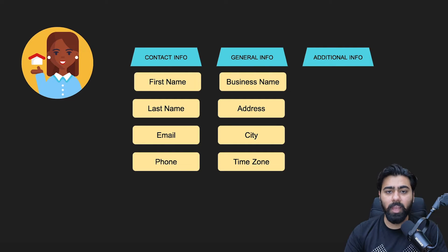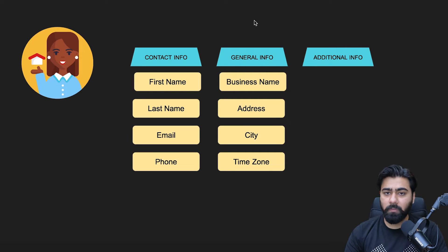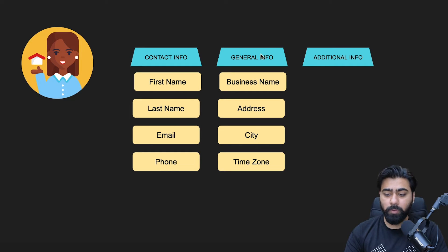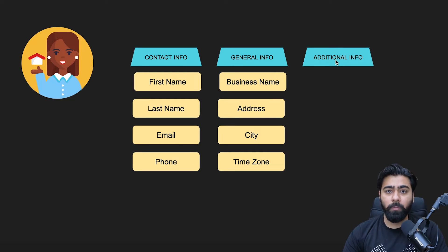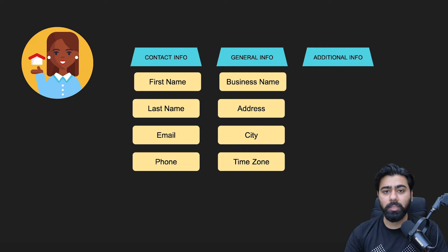Let's say you are a real estate agent with an account in Go High Level. These are the custom fields available to you by default. There are three categories or folders: one is Contact Information, which has custom fields like first name, last name, email, and phone number. Then we have General Info, which includes business and address details, and Additional Info, which is usually empty and you can add more custom fields to it.